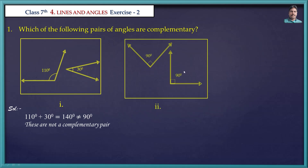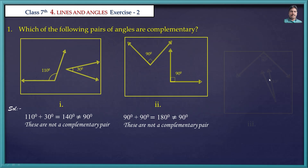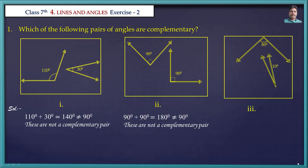Next figure: here two angles are given — 90 degrees and 90 degrees. Sum of 90 plus 90 becomes 180, which is not equal to 90 degrees, so these are not a complementary pair. Next figure: here 80 degrees and 10 degrees are given. 80 plus 10 is equal to 90 degrees, so these are a complementary pair.